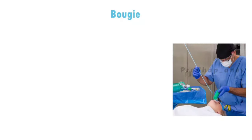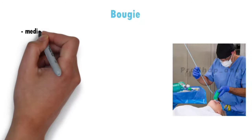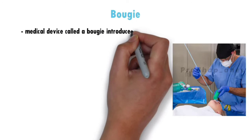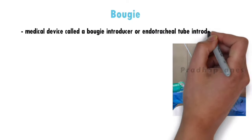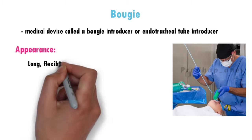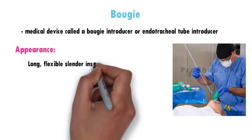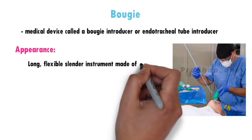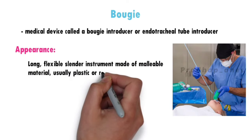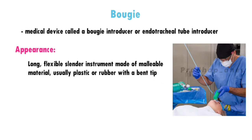Bougie refers to a medical device called a Bougie Introducer or Endotracheal Tube Introducer. In terms of appearance, the Bougie is a long, flexible, slender instrument made of malleable material, usually plastic or rubber, with a bent tip.